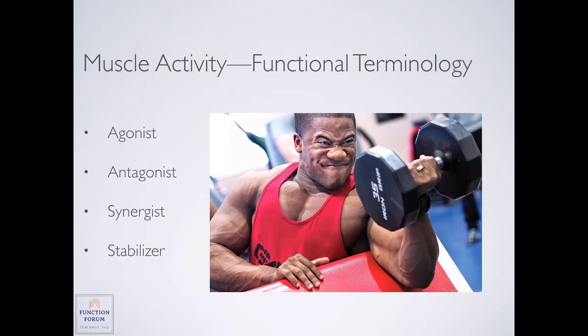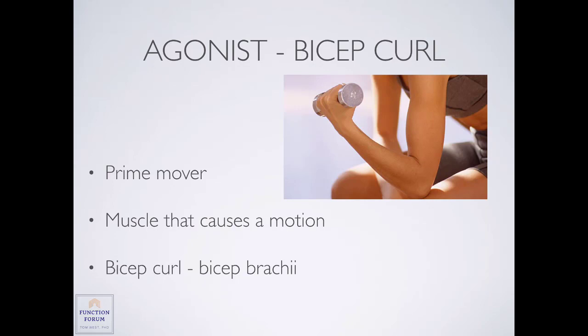When we consider an exercise like the bicep curl, what are the functional roles that muscles can play? With a bicep curl, we're performing elbow flexion. The agonist in a bicep curl is the biceps brachii. The agonist is always the prime mover — the muscle that causes the motion we're discussing. If we were talking about hip flexion, the prime mover would be the iliopsoas because that's their primary role. The agonist is the muscle that produces the motion we're targeting.